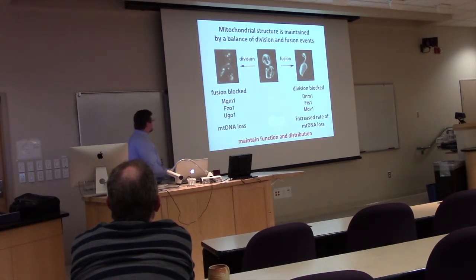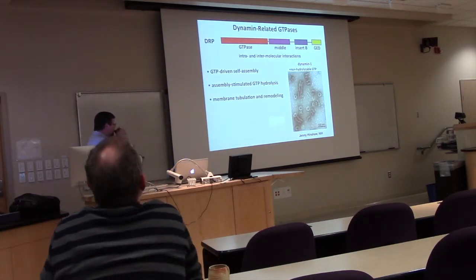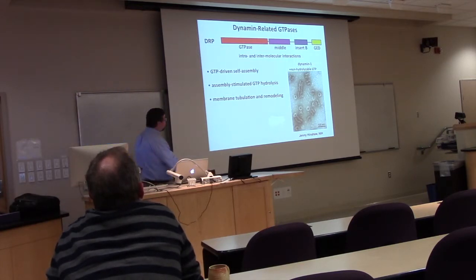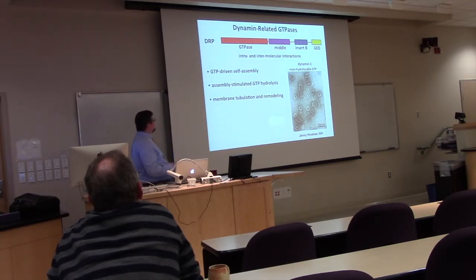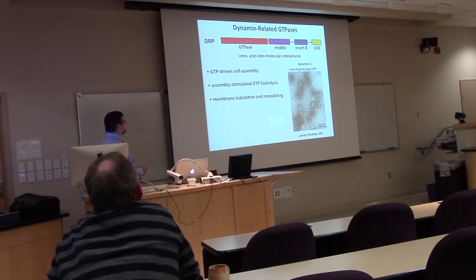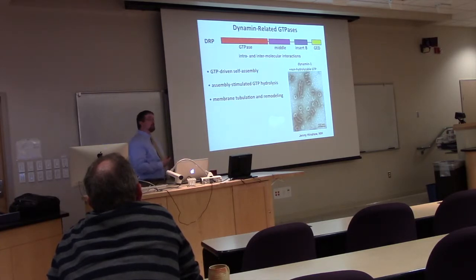Interestingly, DNM1, MGM1, and FZO1 are all dynamin-related GTPases — DRPs. Unlike small signaling GTPases that use GAPs to regulate their GTPase cycle, dynamin GTPases assemble into structures through modular domains, and that assembly stimulates GTP hydrolysis. Another key difference is that these GTPases are mechanoenzymes — motor proteins that actually bend, divide, or fuse membranes.